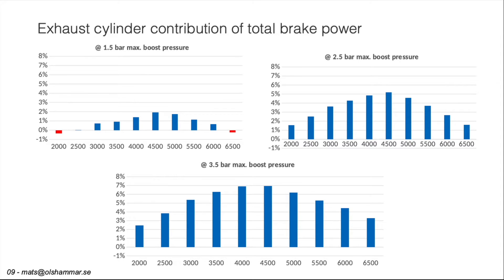We can see that the exhaust cylinder contributes to the total brake power. The contribution is very small for 1.5 bar — only 2% at maximum. For 2.5 bar it's almost 5%, and for 3.5 bar it's close to 7% for some of the RPMs.